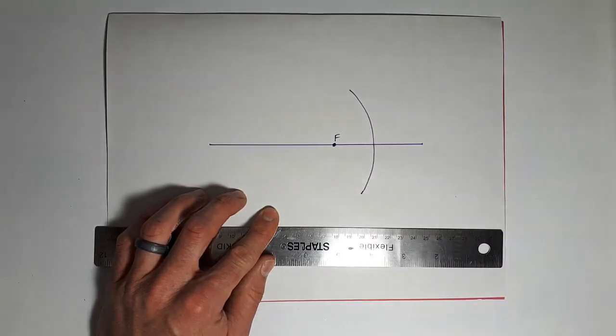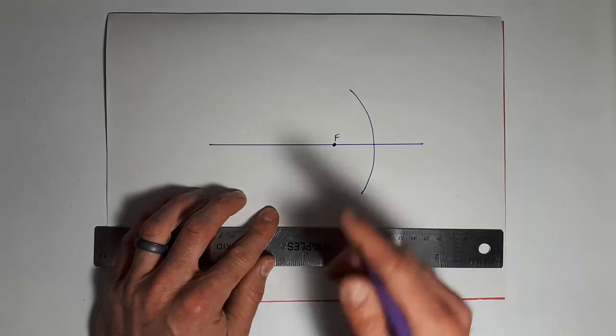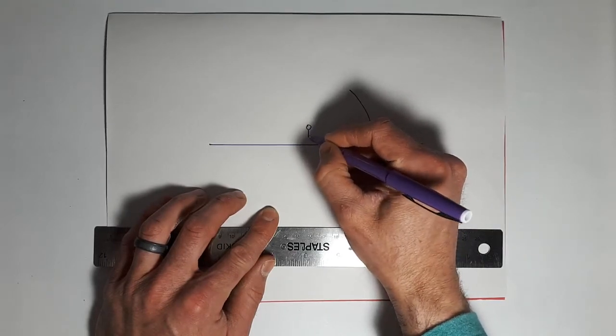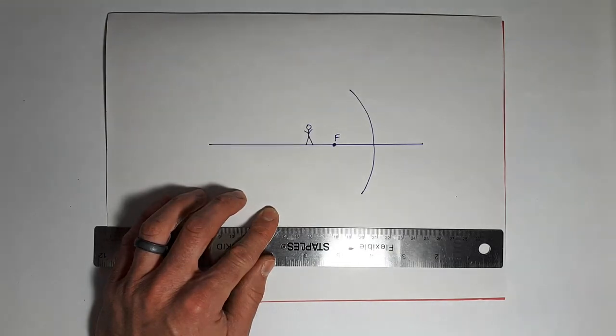All right, so these are already set up for you guys, so you don't have to worry about where you're putting the F. It's already there. You just have to follow it. We're going to do a reflection of a stick person. So I'm just going to put our stick person right here. And of course, we have to follow a couple of rules.